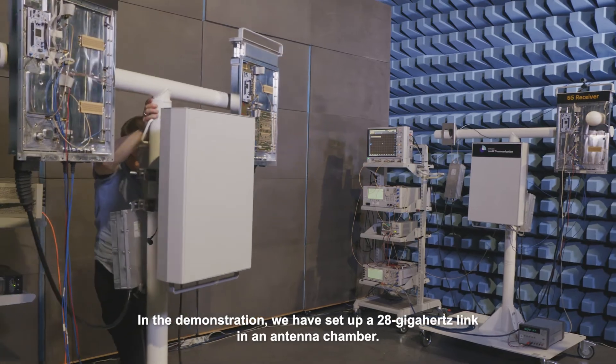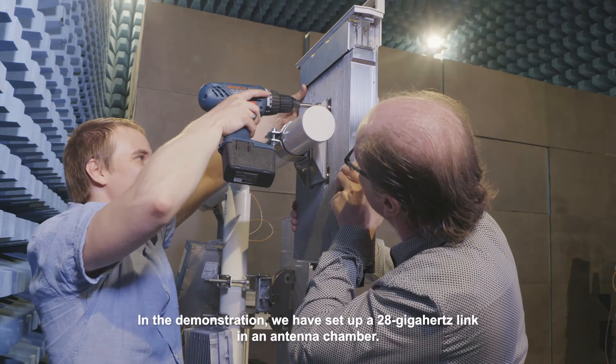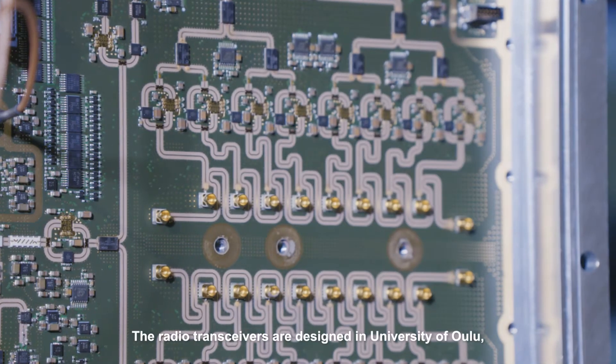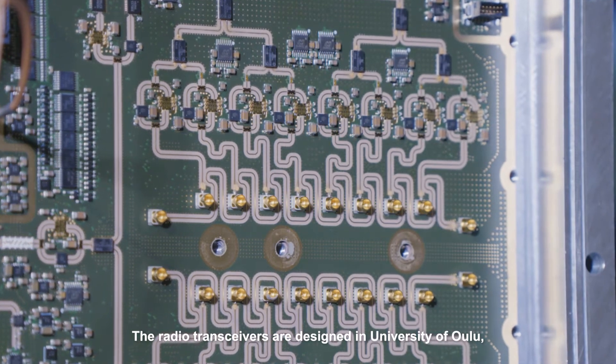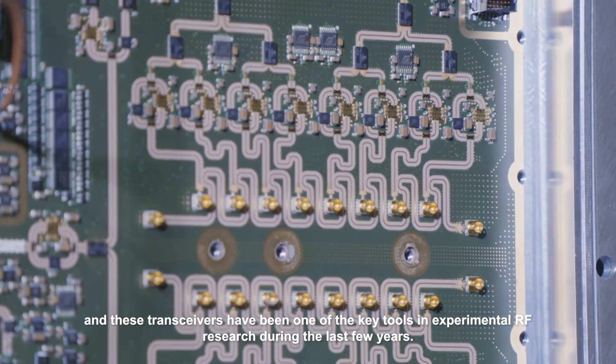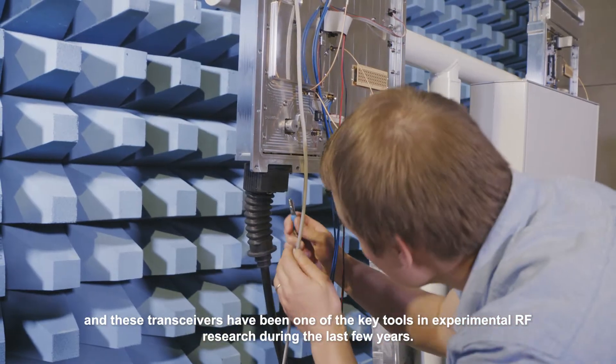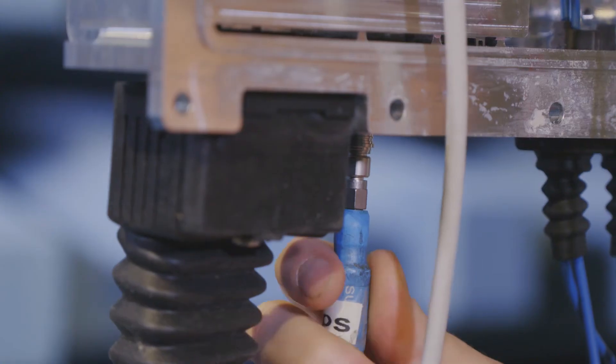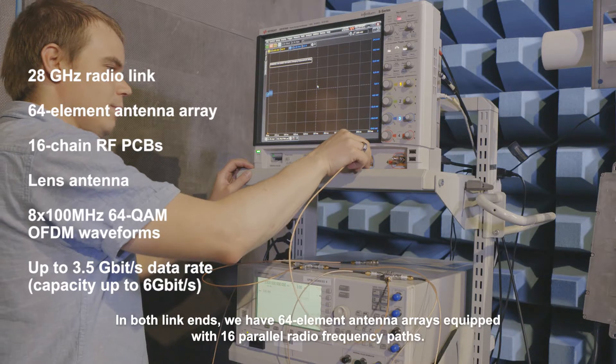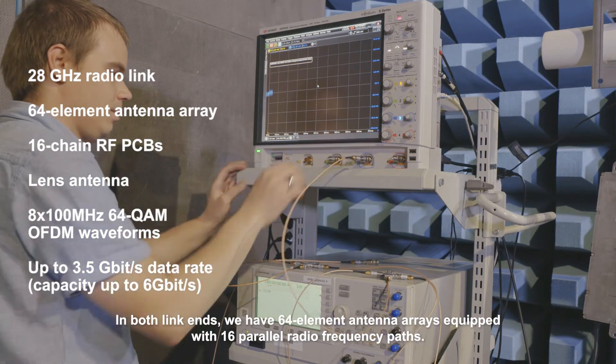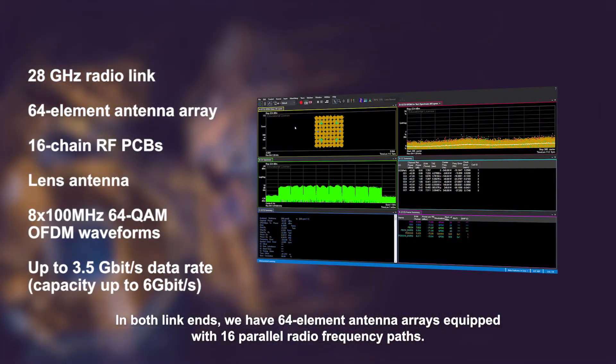In the demonstration we have set up a 28 gigahertz link in an antenna chamber. The radio transceivers are designed at University of Oulu and these transceivers have been one of the key tools in experimental RF research during the last few years. In both link ends we have 64 element antenna arrays equipped with 16 parallel radio frequency paths.